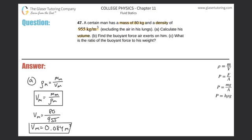And it doesn't ask us specifically what value to calculate. So letter B, it says find the buoyant force air exerts on him. So we have to remember this, that the basic idea here is that the buoyant force acting on an object is equal to the weight of the fluid that was displaced by that object.